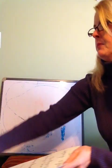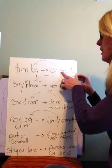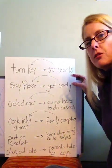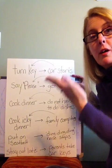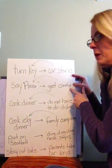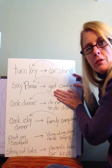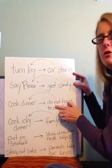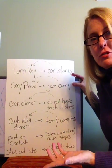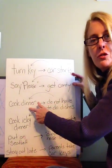Let's re-label our examples. Turn key, car starts — we said reinforcement. Car starts: something is added, the car is running now when it wasn't before, so it's positive. That's positive reinforcement. Get candy — reinforcement, and candy is added, so positive reinforcement. Cook dinner, do not have to do the dishes — reinforcement, and the job of doing dishes was removed, so it's negative. That's negative reinforcement. Family complains — that's punishment, and complaints were added that weren't there before, so positive. That's positive punishment.